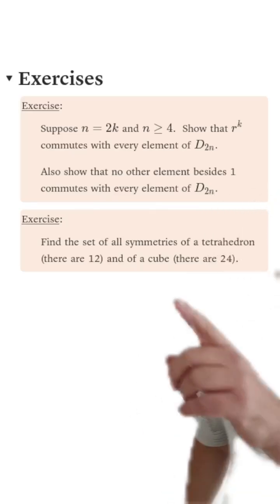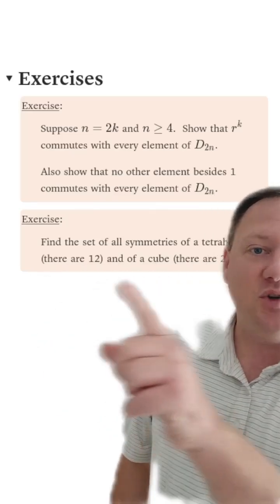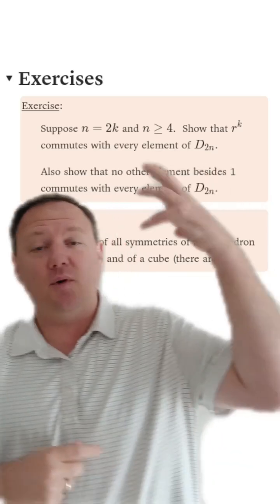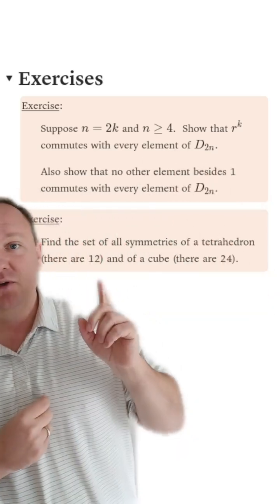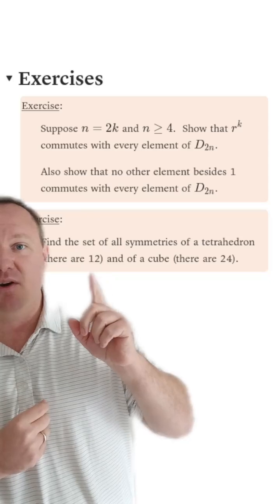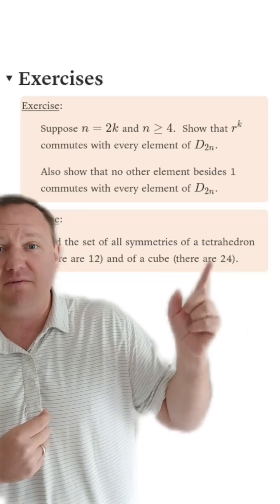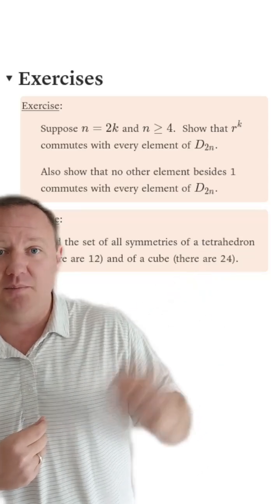Now find the set of all symmetries of the tetrahedron and also for a cube. Popping up into three dimensions, but with a lot of the same ideas, you should find that for the tetrahedron there are 12 symmetries in total and for the cube there are 24, and finding all of them is not a simple task.